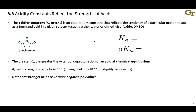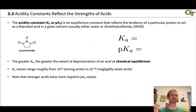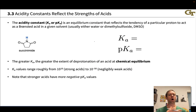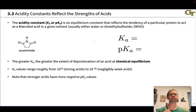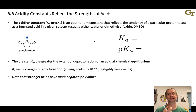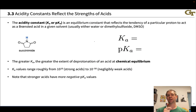Proton transfer reactions are generally very fast — they reach equilibrium very quickly, particularly relative to other elementary steps we'll see. How and whether they proceed depends on the theory of chemical equilibrium and the magnitude of the equilibrium constant for the proton transfer being considered. The equilibrium constant for a proton transfer reaction in a particular solvent is known as an acidity constant when the species of interest is acting as an acid, reflecting the tendency of a particular proton within an organic molecule to act as a Bronsted acid in a given solvent.